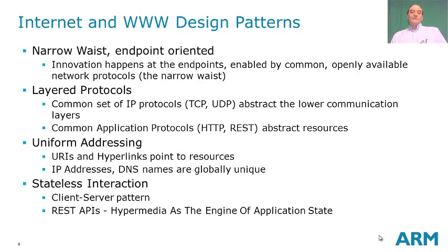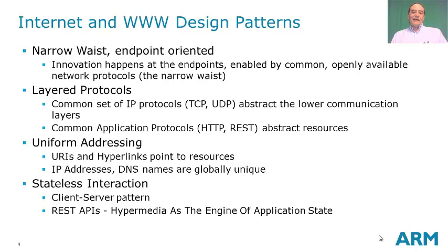In addition, we have uniform addressing. No matter what resource there is on the web, a URI can find it and a hyperlink can point to it, allowing browsers to interact with and discover virtually any resource on the World Wide Web. IP addresses and DNS names are globally unique, so we have a globally scalable web. The interaction is also stateless — a client-server interaction pattern implementing REST APIs, which we call hypermedia as the engine of application state. What this means is that it's the server and the responses from the server that determine what the client does, allowing a large number of clients to interact with a given server, giving it immense scalability.